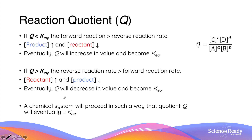An important concept to take away is that a chemical system or reaction will proceed in such a way that the quotient will eventually become equal to the equilibrium constant, whether or not the quotient is smaller than or bigger than the equilibrium constant at the very beginning.